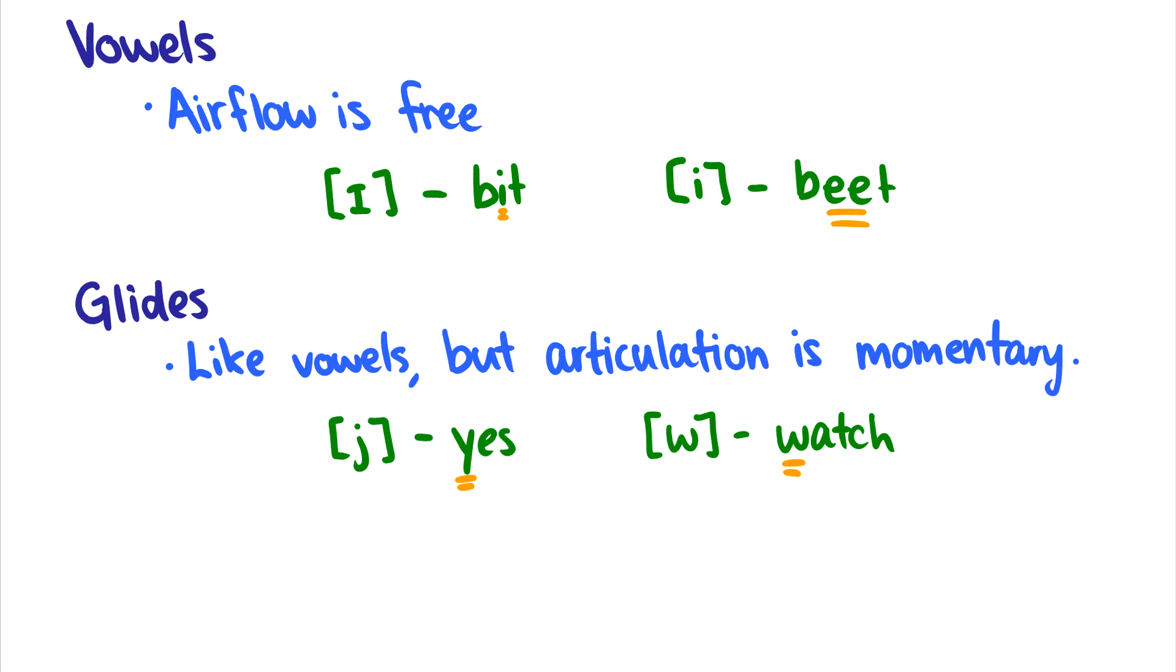With vowels, it is completely the opposite. Vowels have very free airflow. Bit. Beat. I, eh, uh, oh. You have a lot of space in your mouth to make these vowels, and air can flow very freely without any friction at all.